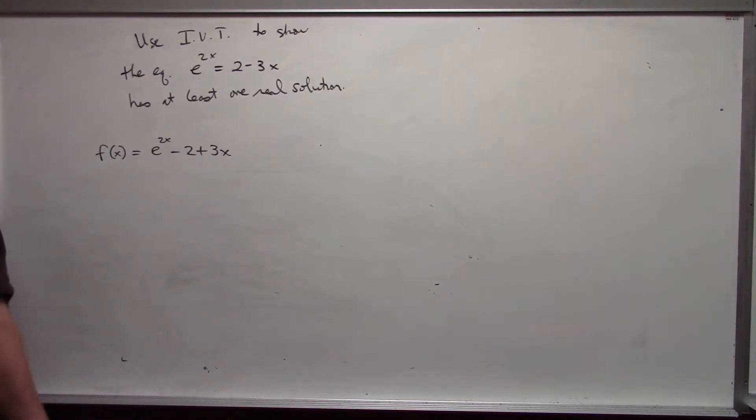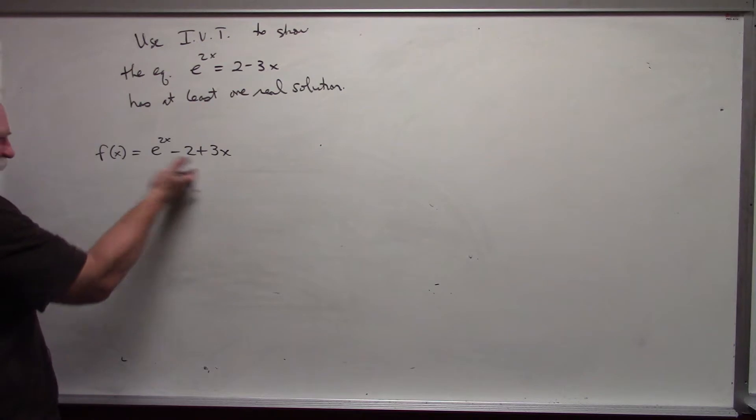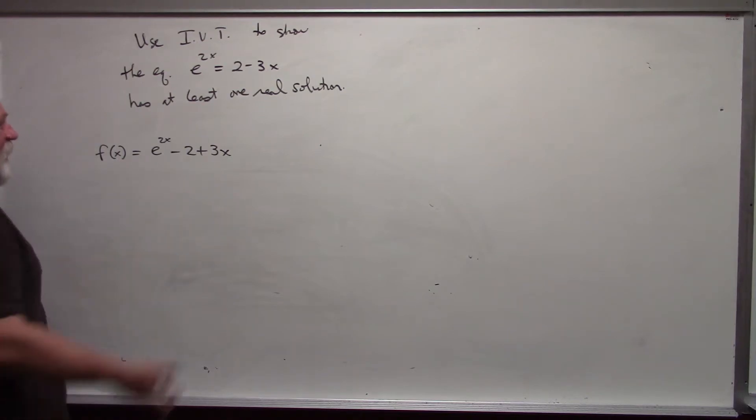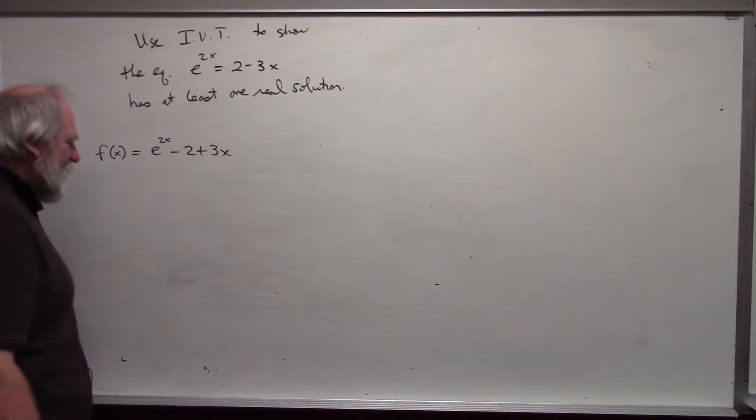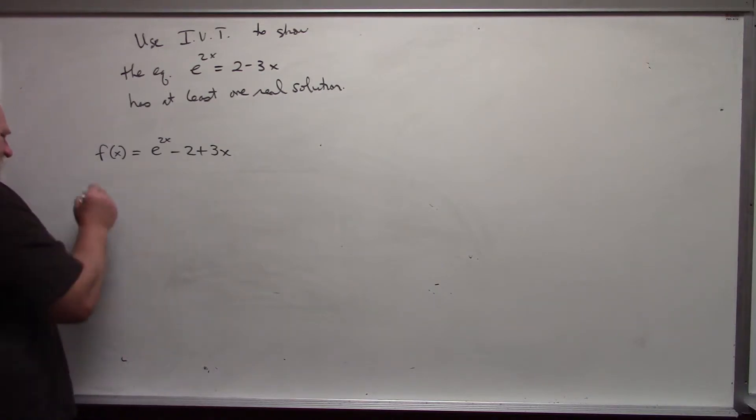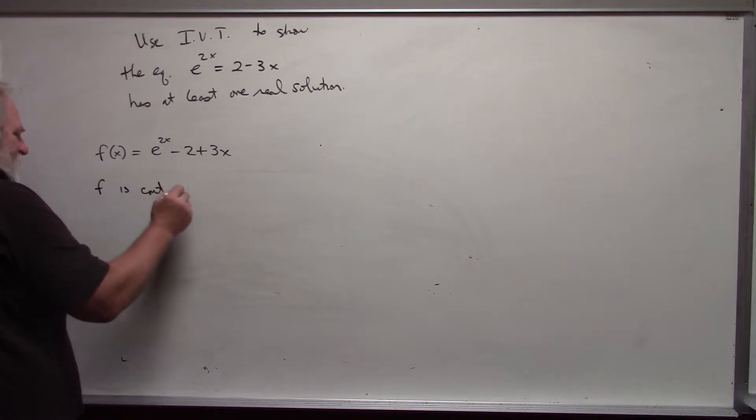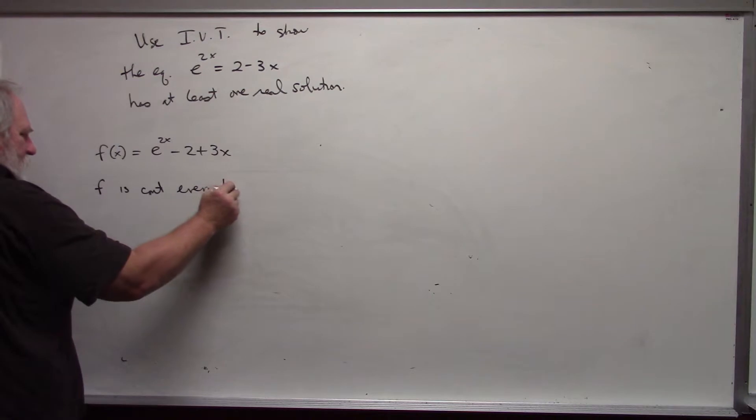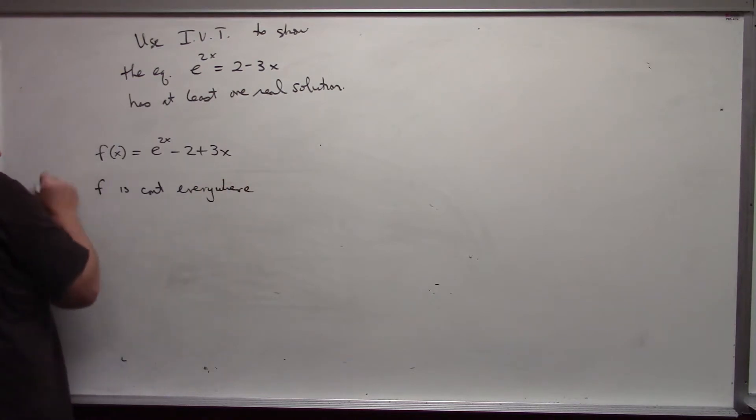Now, IVT requires that my function is continuous. This particular function has no problems. Exponential functions and polynomial functions are continuous everywhere. So this function is continuous. We will state F is continuous everywhere. We need to write each of these steps that I'm writing. All of this is necessary.